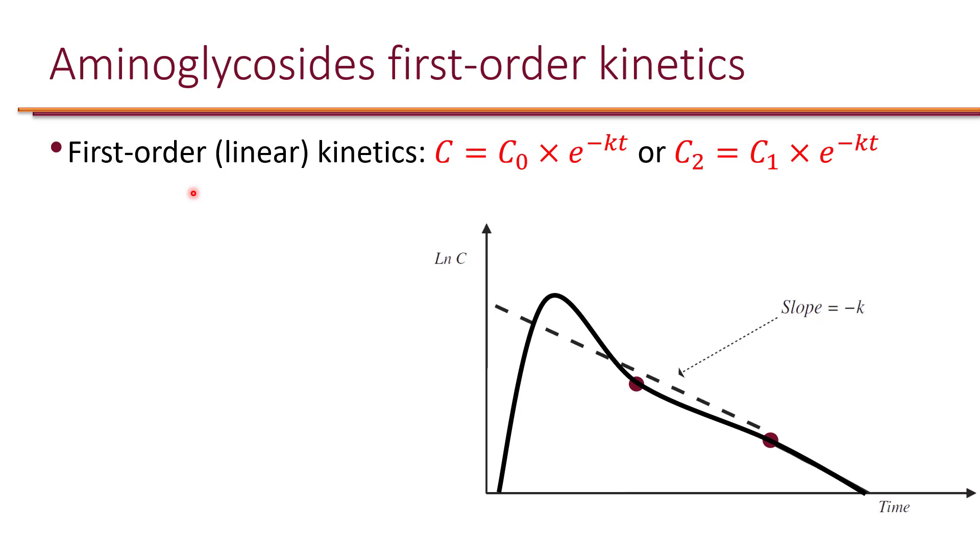Aminoglycosides follow first-order kinetics, also known as linear kinetics. The reason this is called linear kinetics is because if you plot the natural log of aminoglycoside plasma concentration on the vertical axis and time on the horizontal axis, then you can get a linear relationship between two levels.